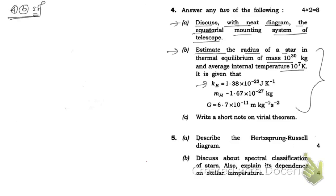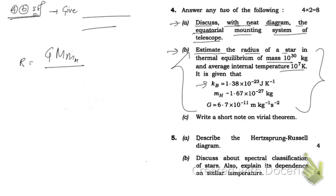First mention all the given information, then solve. The formula we're going to use is: R equals G times M times m_H divided by k_B times T. Make sure to mention this data in your solution. I will use the values directly from the question.